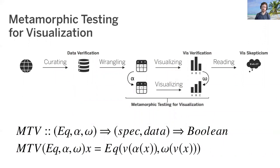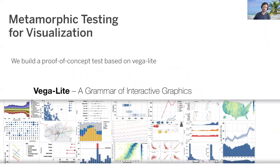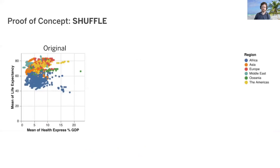We combine these into a metamorphic testing for visualization framework, written both graphically and in pseudo-Haskell. We note that these assertions are parameterized by the way that data is changed (alpha), the way that the output is modified (omega), and the way that these are compared (equality). We believe this technique would be effective when used in conjunction with other methods, such as data verification, direct vis verification, and of course healthy skepticism. To test the validity of this technique, we built a proof-of-concept system that applied metamorphic testing for visualization to a simple static subset of Vega-Lite charts. Vega-Lite is a charting library that implements the grammar of graphics through a static and machine-friendly API, which makes it easier for our system to automatically reason about metamorphic assertions.